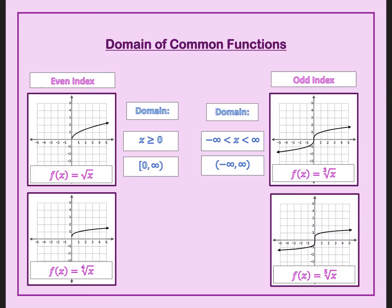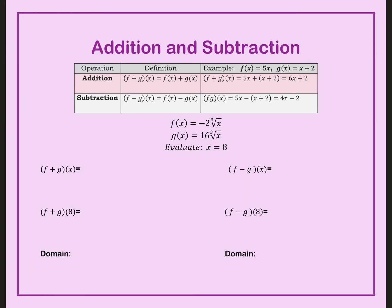Let's look at the domain of common functions. If we are dealing with an even index, such as the square root or the fourth root, my domain is going to be zero to infinity — written as x is greater than or equal to zero, or in interval notation, zero to infinity. If I have an odd index, such as the cube root of x or the fifth root of x, my domain is all real numbers, from negative infinity to positive infinity. So, if I have a mixture of a square root and a cube root, the only domain that's in both is zero to infinity.